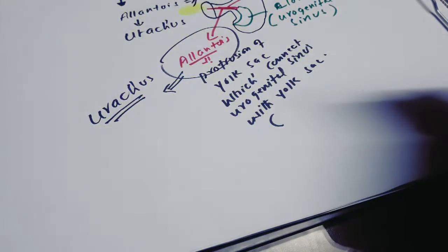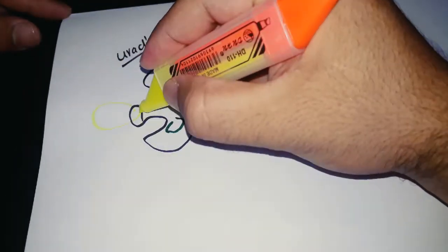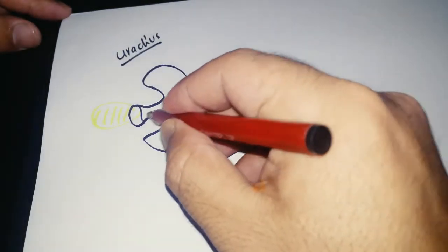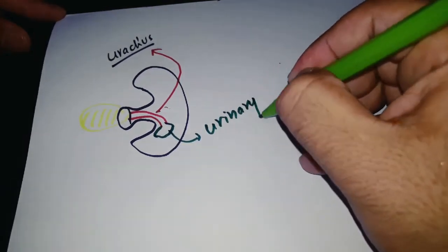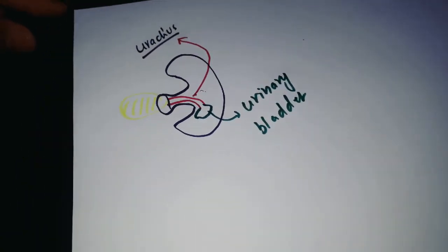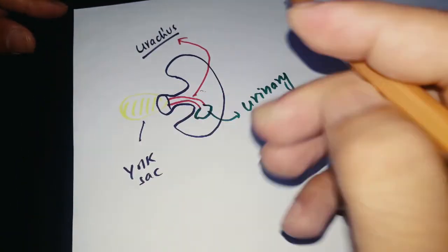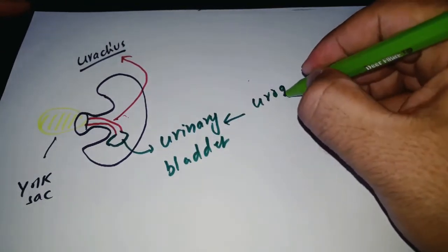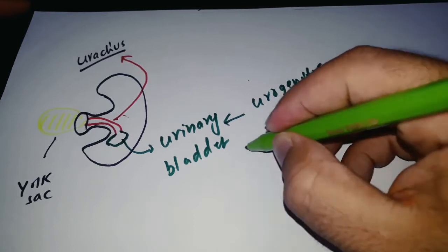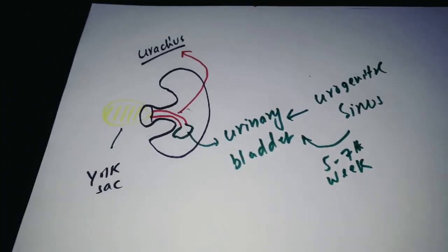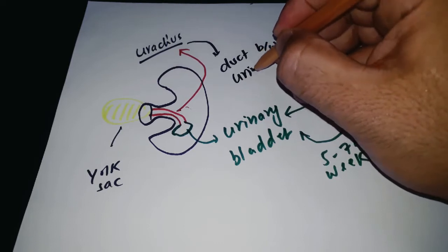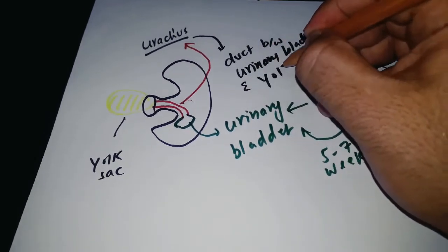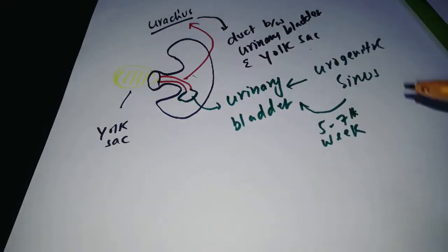As the urogenital sinus forms the urinary bladder, let's talk about the urachus. In the diagram, this duct is actually the urachus, and here you can see the fetal urinary bladder. A duct between the yolk sac and the urinary bladder is called the urachus. The urinary bladder is made from the urogenital sinus in the fifth to seventh week of gestation. So the urachus is the duct which is present between the fetal urinary bladder and the yolk sac.